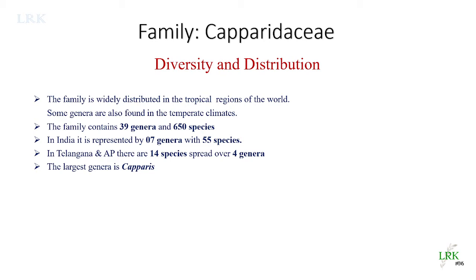In Telangana and Andhra Pradesh, there are a total of 14 species spread over 4 genera. The largest genus of the family is Capparis, and the type genus itself is Capparis, which contains 350 species. So it is both the largest and the type genus of this family.